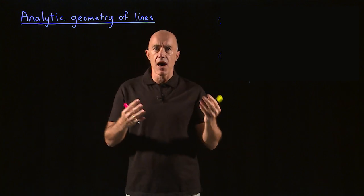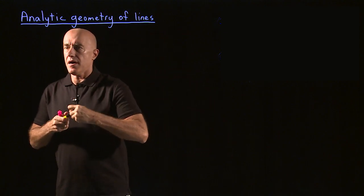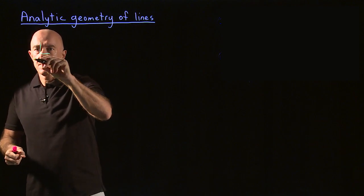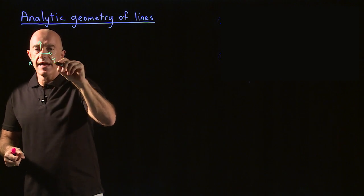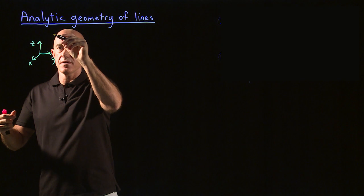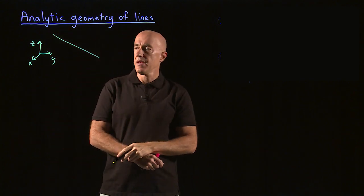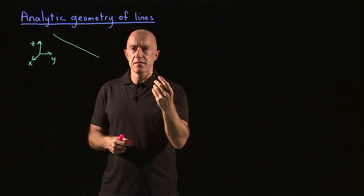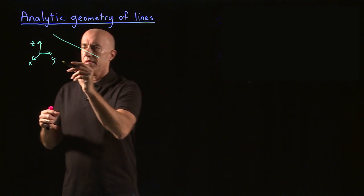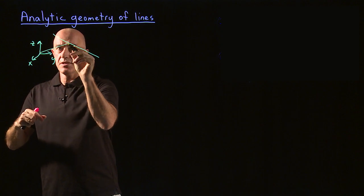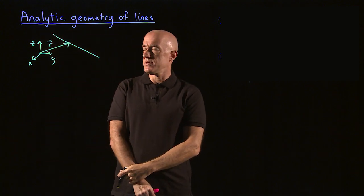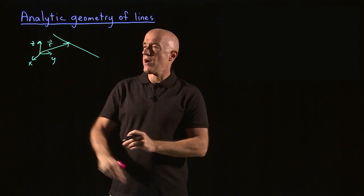So how do we describe a line in three-dimensional space? We have some axes — this is our x, y, z axis. And then we have some line in three-dimensional space. We want to locate a point on this line using a position vector. So this is r — we locate a point on the line using this position vector, and we would like to know how to express r.